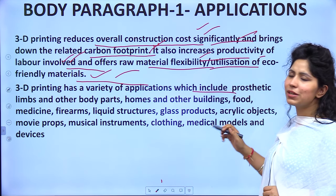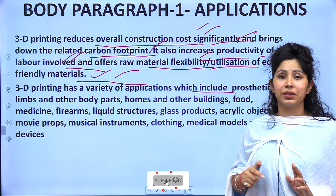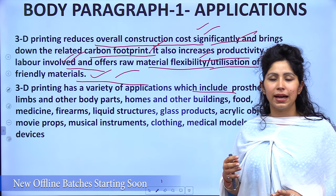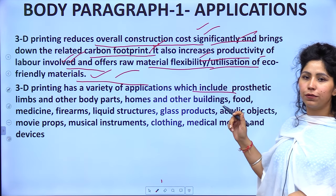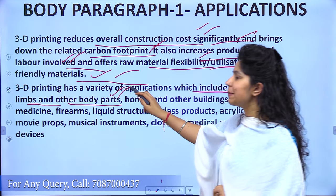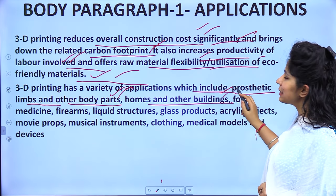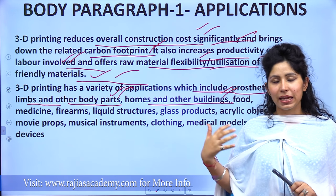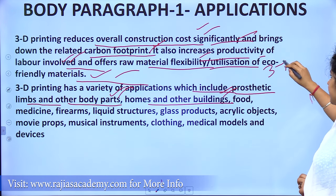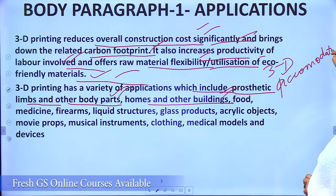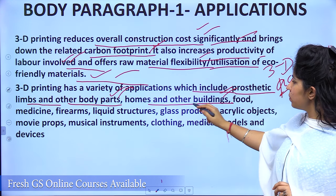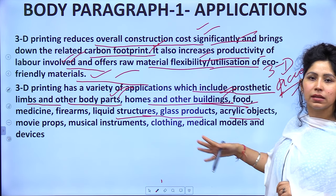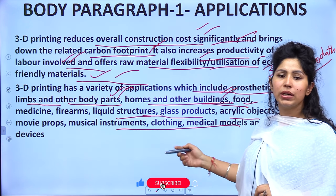Talking about applications — you can give a list. Biotechnology uses 3D printing: artificial tissues and artificial organs have been in use for at least the past five years. Prosthetic limbs can be developed, other body parts including organs can be developed, homes and other buildings can be developed. Recently the government of India decided that troops defending our country in Ladakh will be given 3D printed accommodation. Other applications include food, medicine, firearms, liquid structures, glass products, acrylic objects, clothing, and medical models and devices — the list is exhaustive.